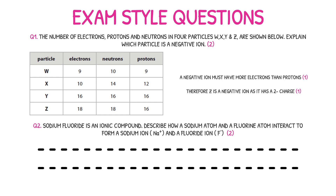Question 2 asks for you to describe how a sodium and fluorine atom interact to form a sodium ion with a plus-one charge and a fluorine ion with a minus-one charge. Remember that an atom is a particle with no charge, so this question is asking you to describe how sodium and fluorine go from being neutral particles to charged particles. As sodium has a positive charge of plus one, this tells us that it has lost an electron, and as fluorine has a negative charge of minus one, this tells us that it has gained an electron. Your first marking point is for stating that one electron is lost from sodium, and your second marking point is for indicating that this one electron is then transferred to fluorine. So how did you do? Let me know in the comment section below.